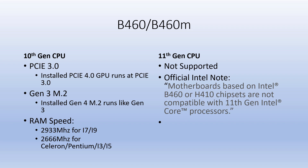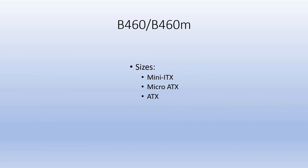For i7 or i9, most of the time I'll put 3000 MHz RAM in there — it will be compatible but run only at 2933 MHz. For Celeron, Pentium, i3, and i5 the max RAM speed is 2666 MHz. You could put RAM fixed at 2133 or 2400 in there but it will not run any faster than those speeds. Form factors available are Mini-ITX, Micro-ATX, and ATX.